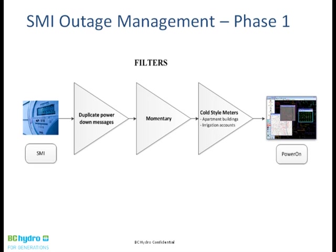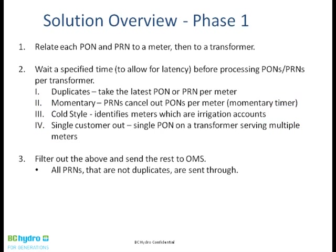The filtering process has multiple layers of logic. It relates a PRN to a meter, and then we relate the meter to a transformer using a common network topology model. We check whether it's a single outage or not. If it's a single customer, we assume with relatively high probability it's not a distribution issue — though a few more validation steps may be required. If we get multiple outage notifications, that's probably something we need to act on.